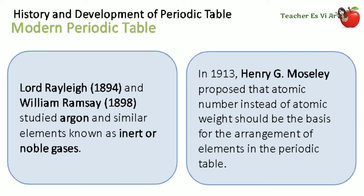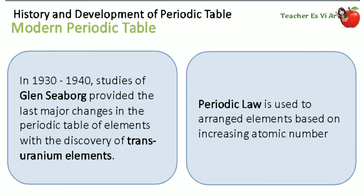From 1930 to 1940, studies by Glenn Seaborg provided the last major changes in the periodic table of elements, with the discovery of transuranium elements. Periodic law is used to arrange elements based on increasing atomic numbers.